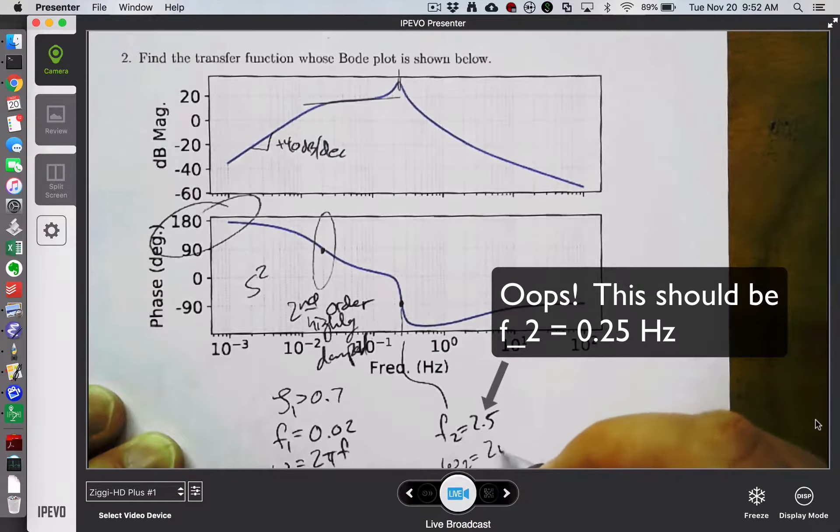At this point, we're ready to assemble our final transfer function. There are four different terms: the double differentiator, the first order zero, and the two underdamped second order poles, or the option to replace that first one with two real poles.